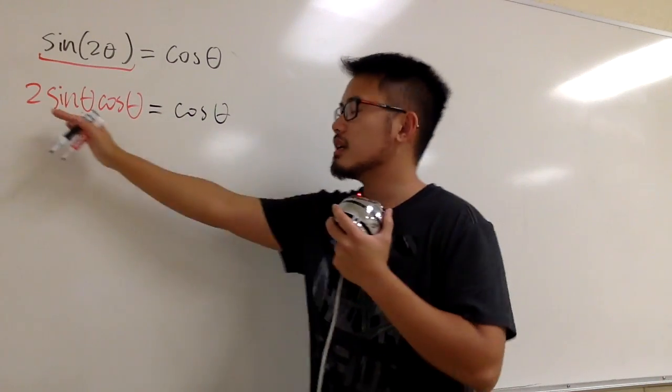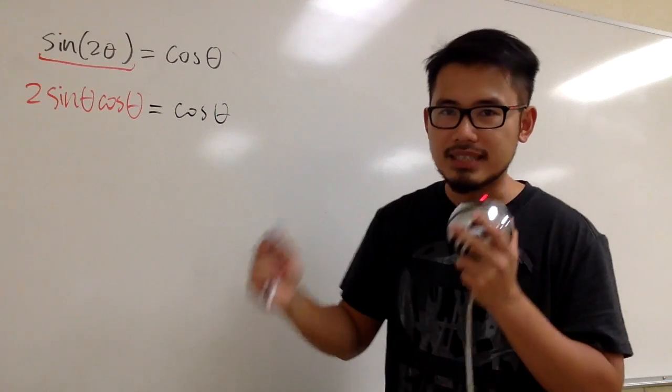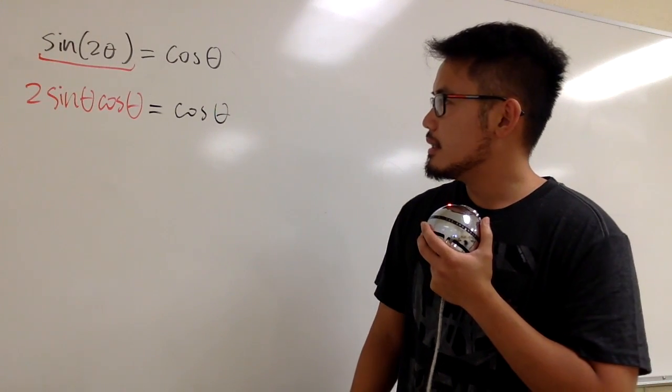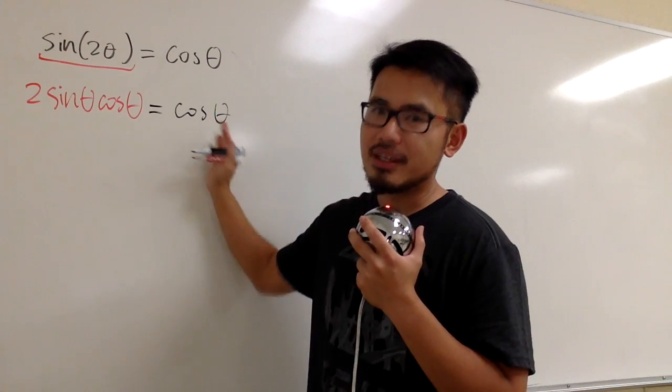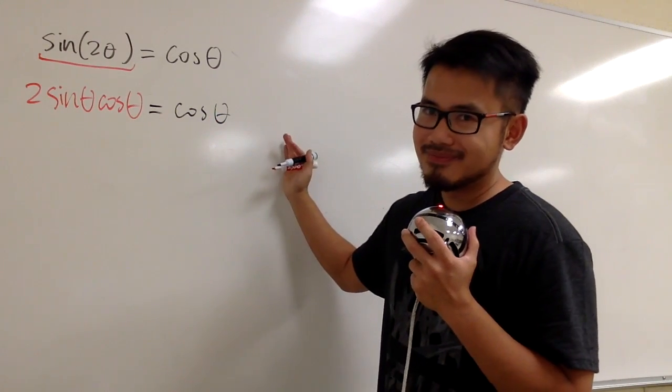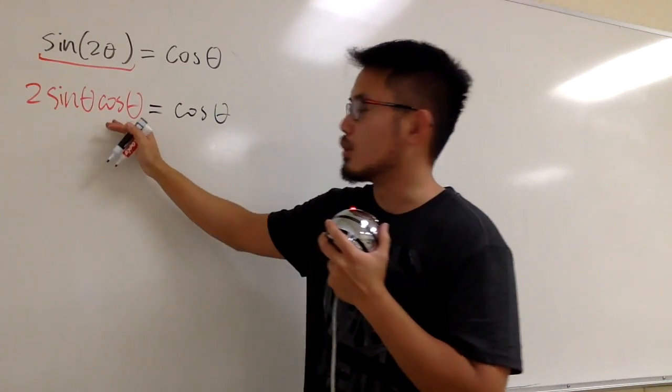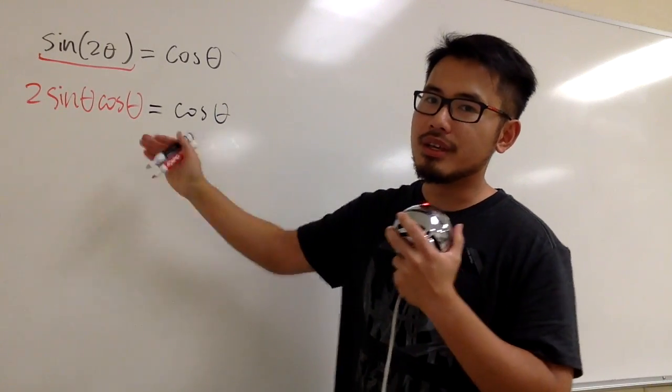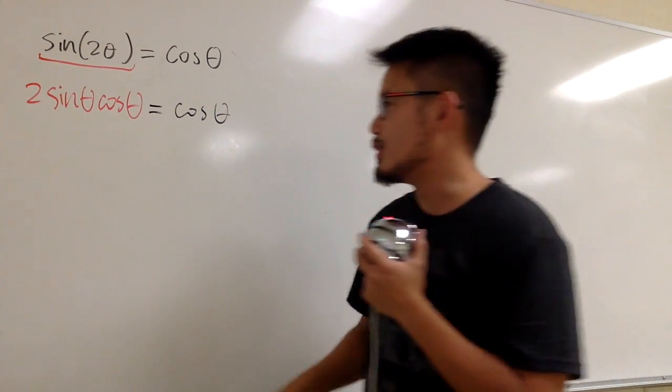But as you can see, this equation involves both sine and cosine. Well, I'm just going to subtract cosine θ on both sides, because that way, the right-hand side will be 0, and then this term has cosine θ, and then we can factor out the cosine θ, nice things will happen. Let me show you.